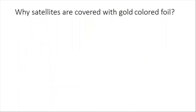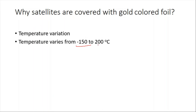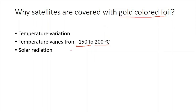Why are satellites covered with gold colored foil? There are two main reasons. First, there is a huge temperature variation in space, from negative 150 to positive 200 degrees Celsius, so satellites must be covered with materials that resist temperature change. Second, the gold colored foil also protects against solar radiation from the sun, which could otherwise damage the satellite.